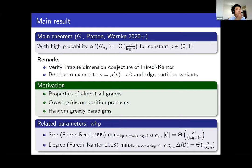Now let's move to our main result. We solve the conjecture by proving that with high probability, the clique chromatic number of G(n,p) has this order of magnitude for all constant p. By the relation mentioned in the last slide, this implies the proc dimension conjecture of Fuli and Kanter. We also prove stronger results: when p tends to zero, we not only determine the order of magnitude but also determine the asymptotics.